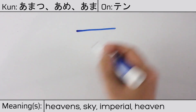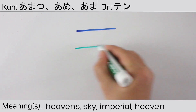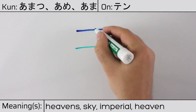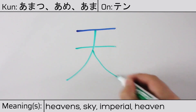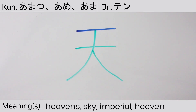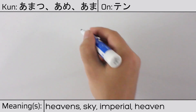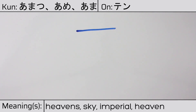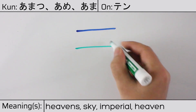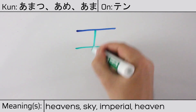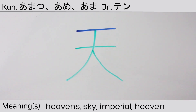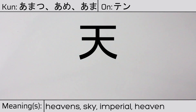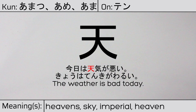This character is made up of the following radicals or parts: kanji ichi, followed by big or very, dai. You can remember this kanji by the following hint: up in the big skies above. Our example sentence is: Kyouwa tenki ga warui — The weather is bad today.